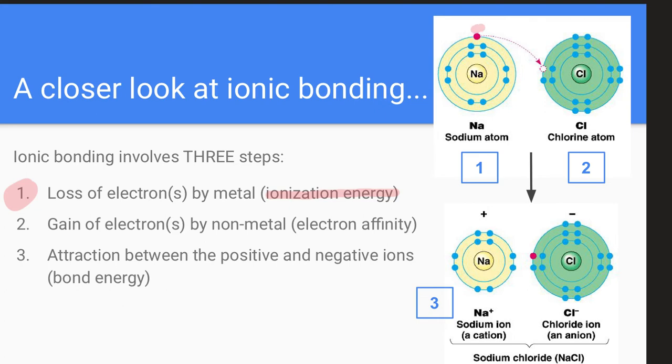In our diagram here, our sodium metal has one valence electron, and it is losing that electron. In step two, we're gaining electrons by the nonmetal. That's our electron affinity, if you remember from our other video. Chlorine with seven valence electrons is gaining an electron.